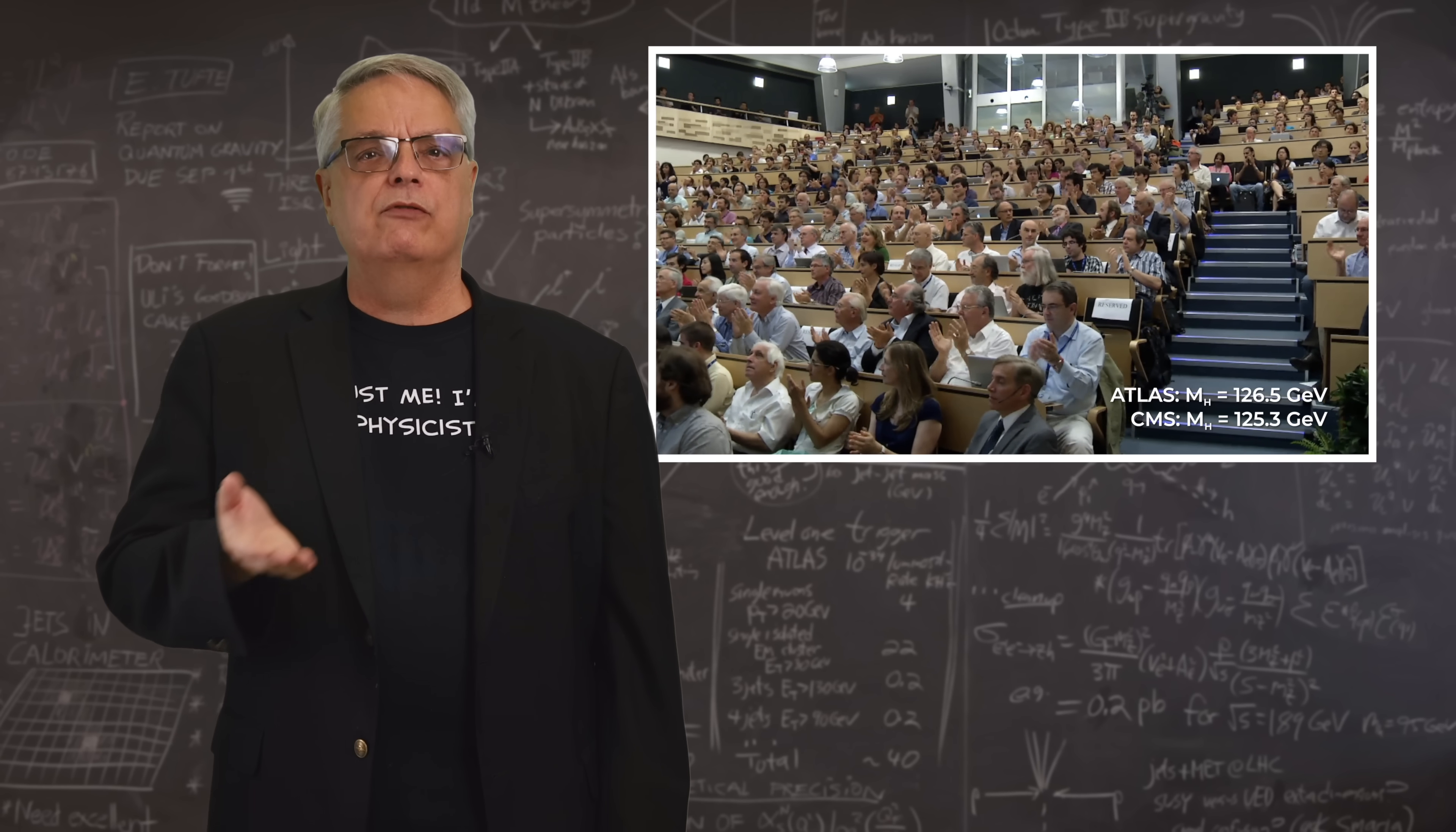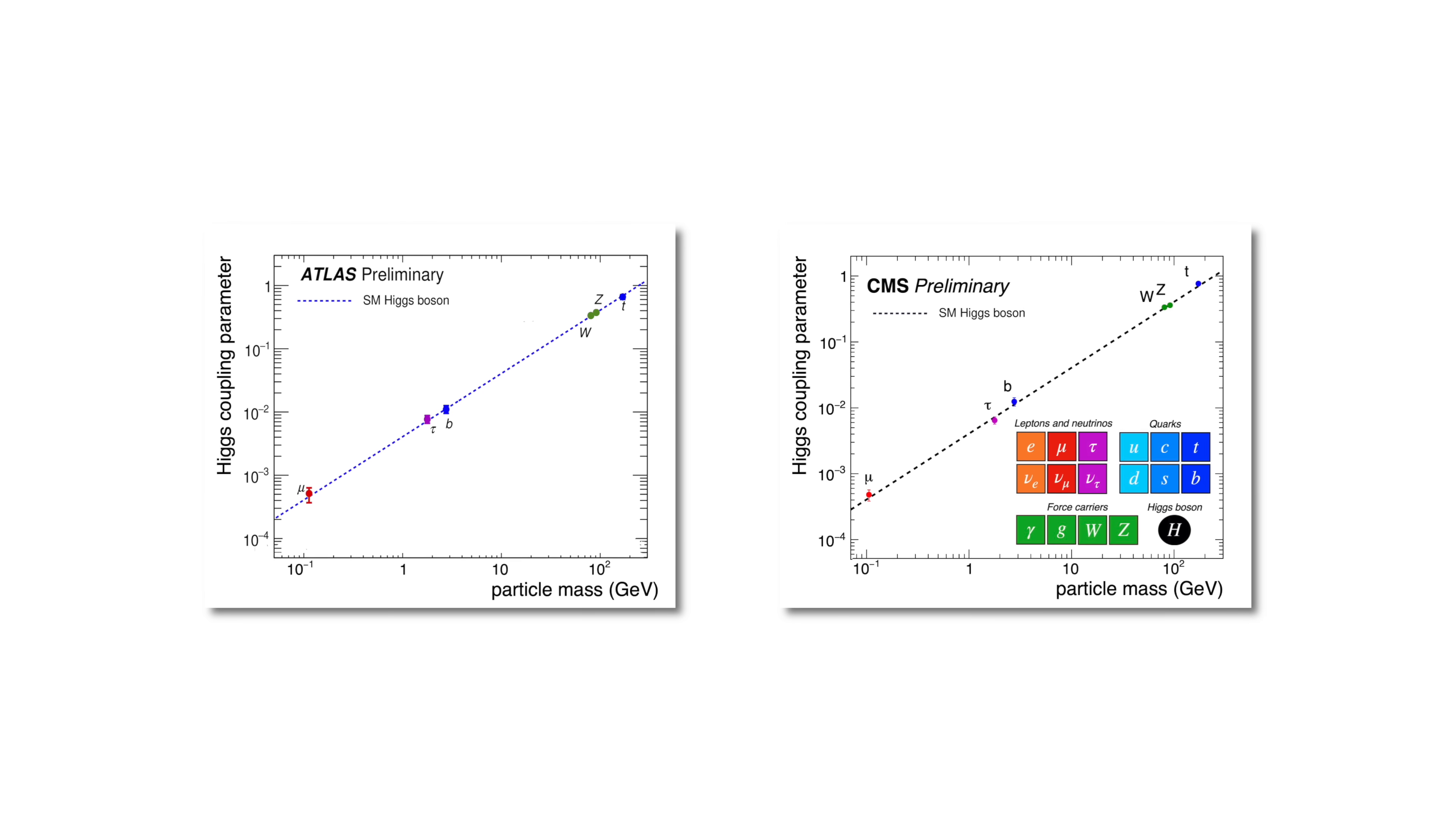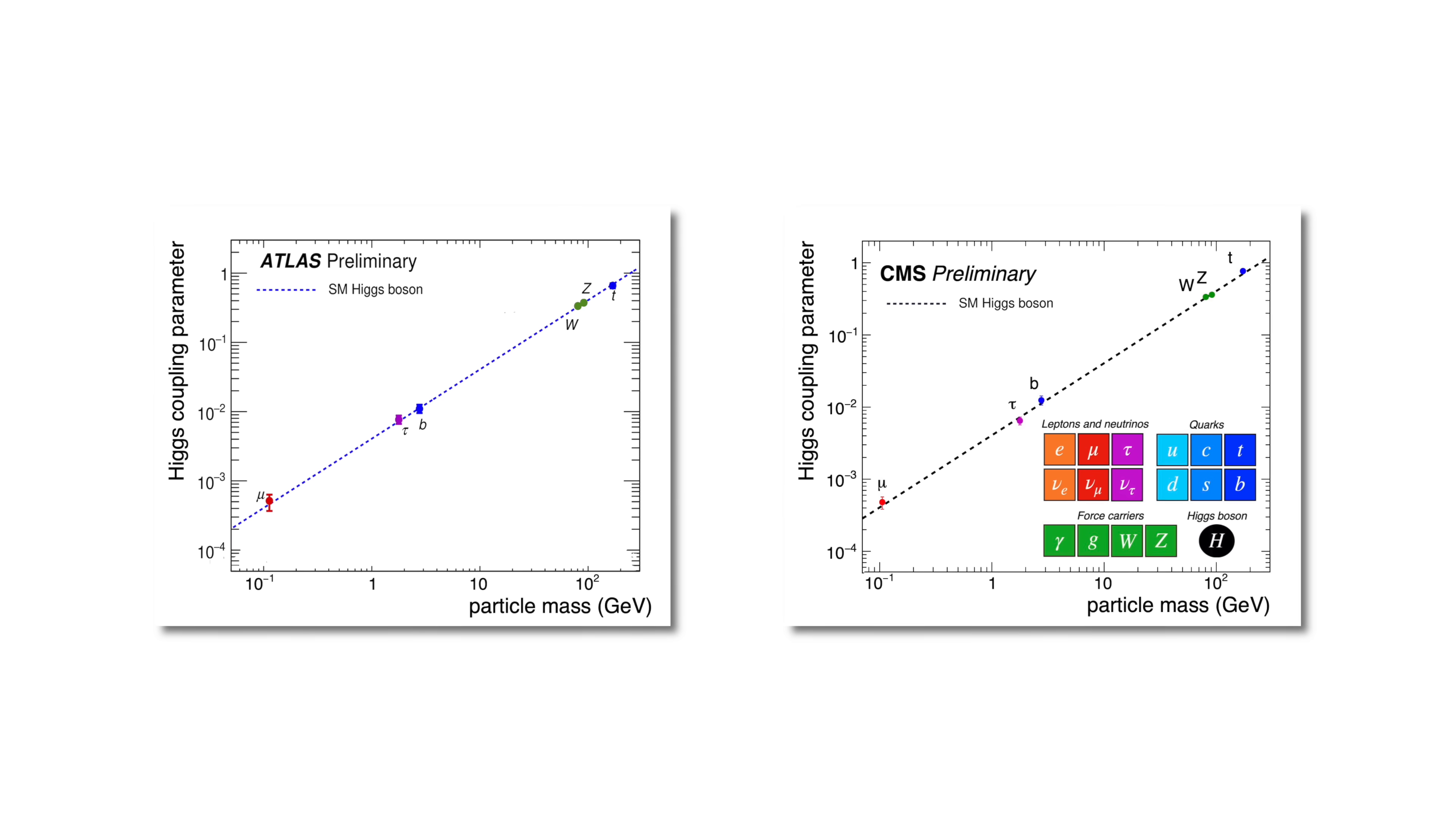The announcement of the discovery of the Higgs boson in 2012 wasn't the final word. Truthfully, all they knew for sure was that a new particle had been observed. It took years of more data to verify that the particle predicted back in the 1960s had been discovered. Scientists did that in a couple of ways, but one of the more persuasive measurements was to check to see if the particle decayed to other particles in the exact proportions predicted by Higgs theory, and we can see that both LHC experiments validate the prediction. Mind you, this isn't the only cross-check, but it's a good one. And all of the other cross-checks tell the same story.